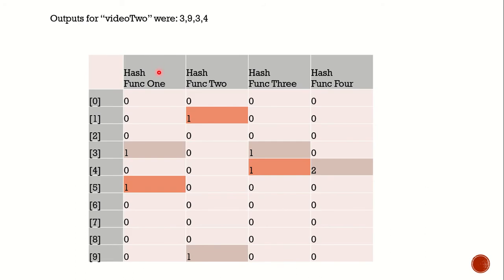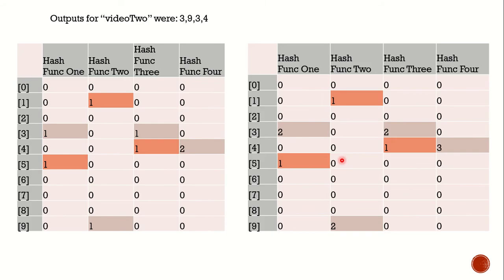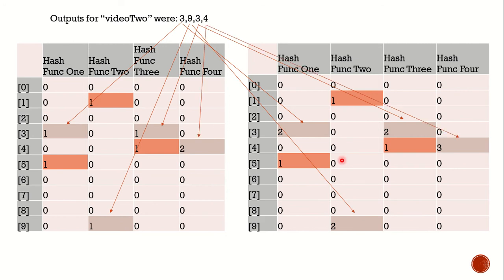For hash function 1 for video 2 we got 3, so we increment index 3. For hash function 2 we got 9, so we increment index 9. For hash function 3 we update index 3, and for hash function 4 we increment index 4. If we watch video 2 again, we increment the same counters: index 3 for hash function 1, index 9 for hash function 2, index 3 for hash function 3, and index 4 for hash function 4.